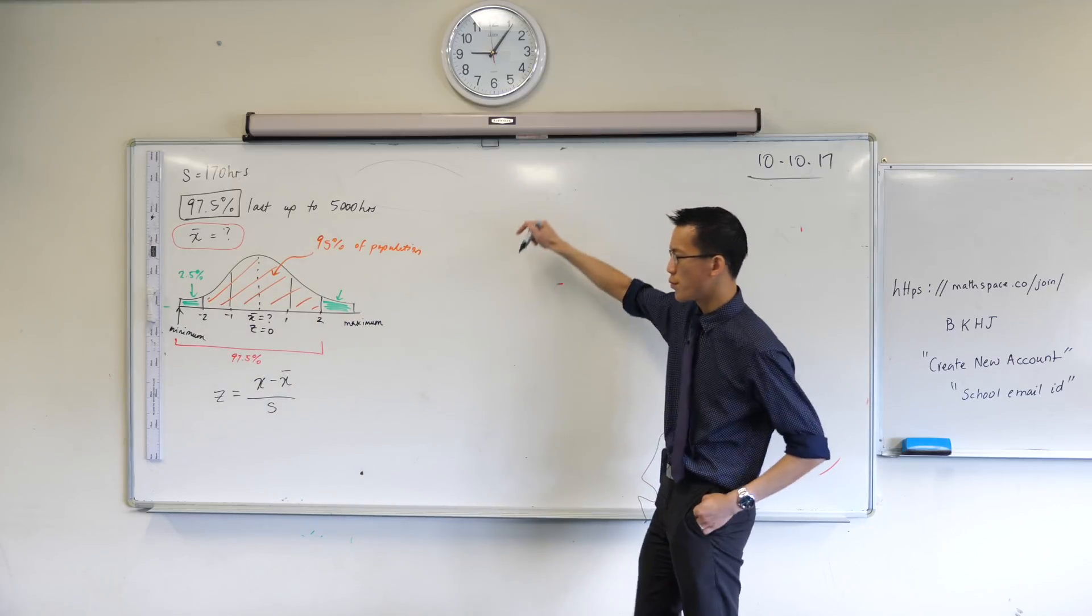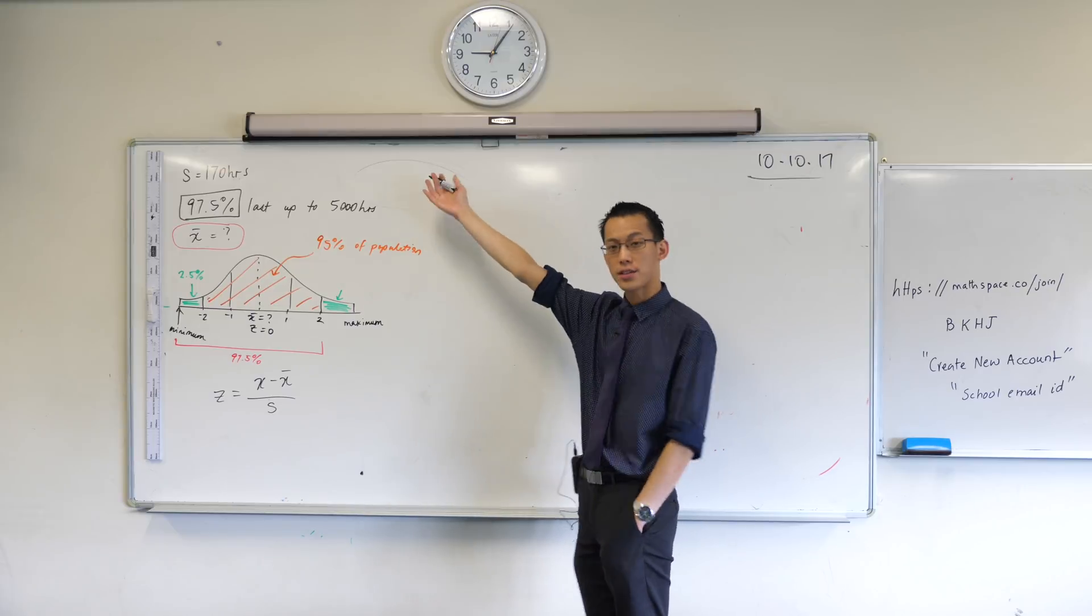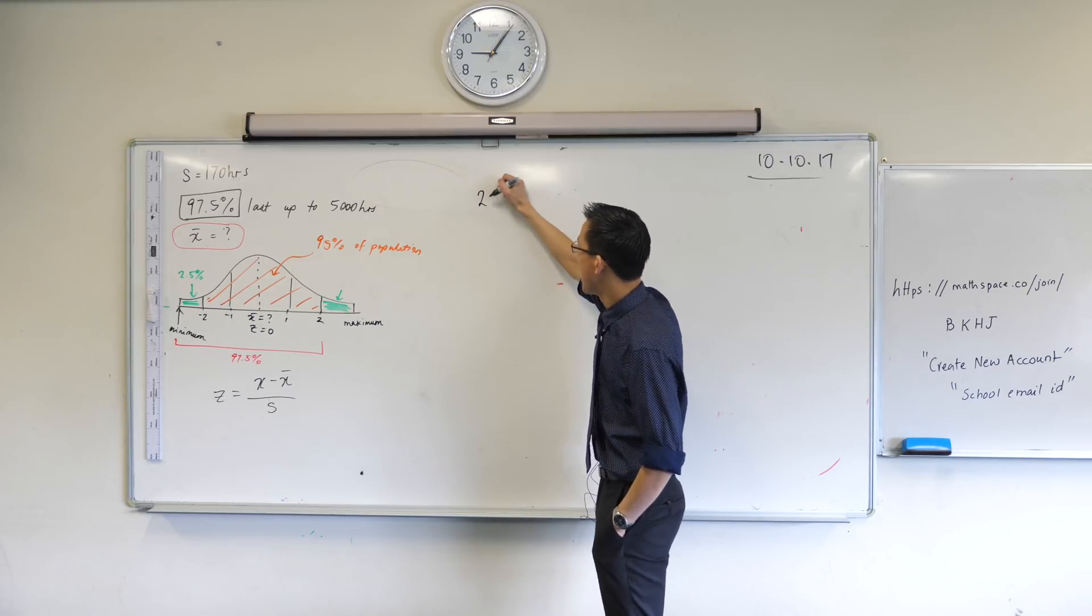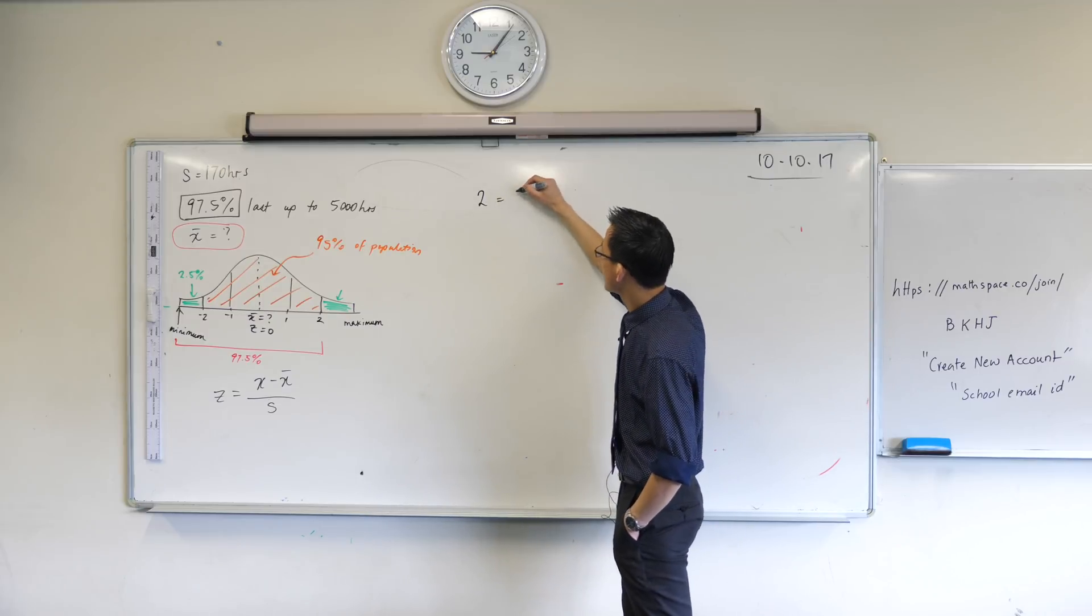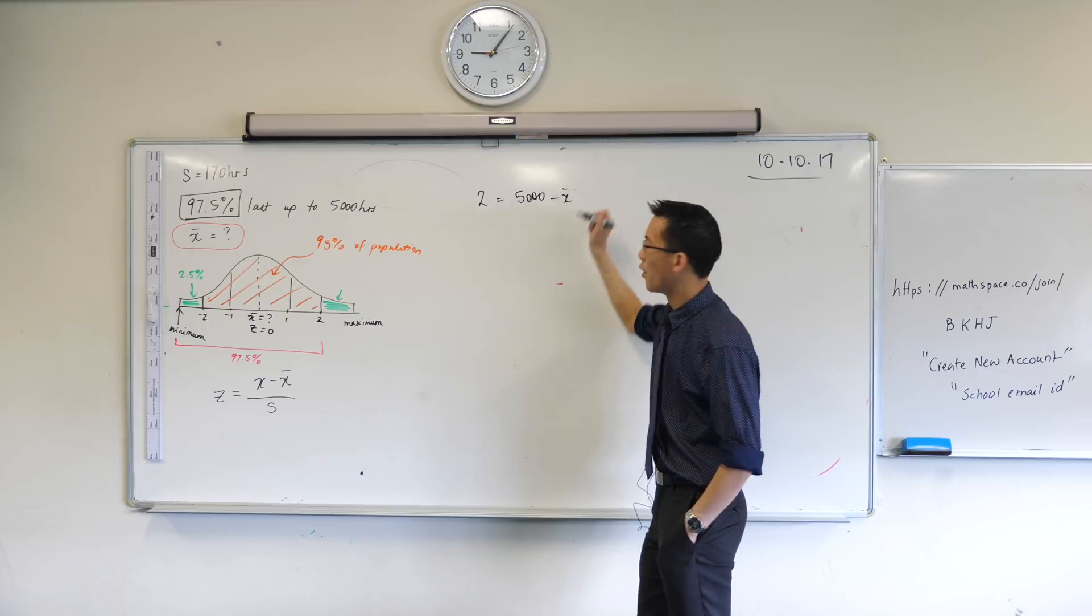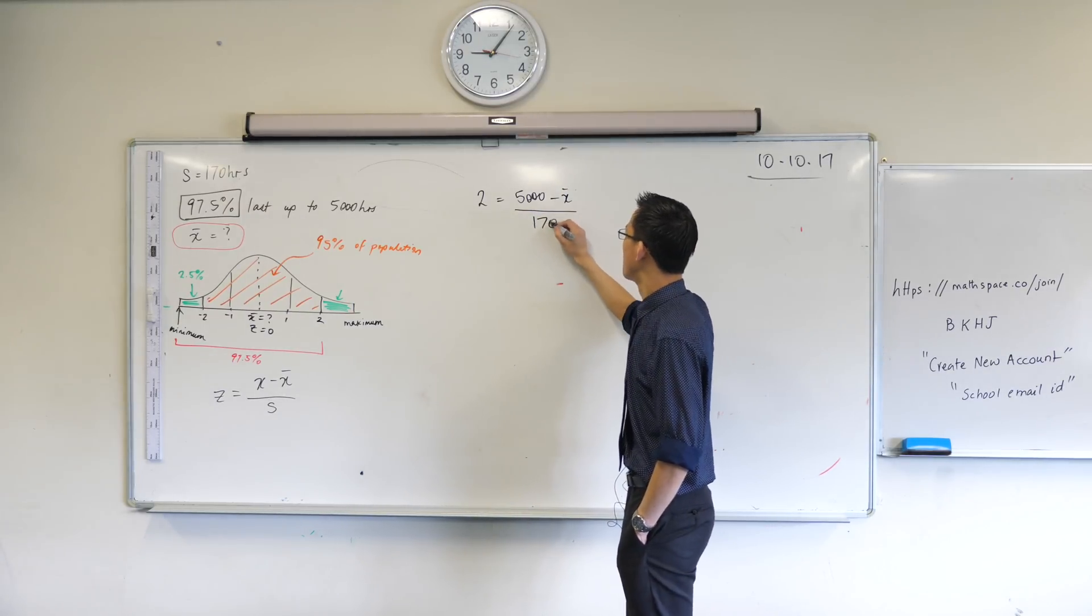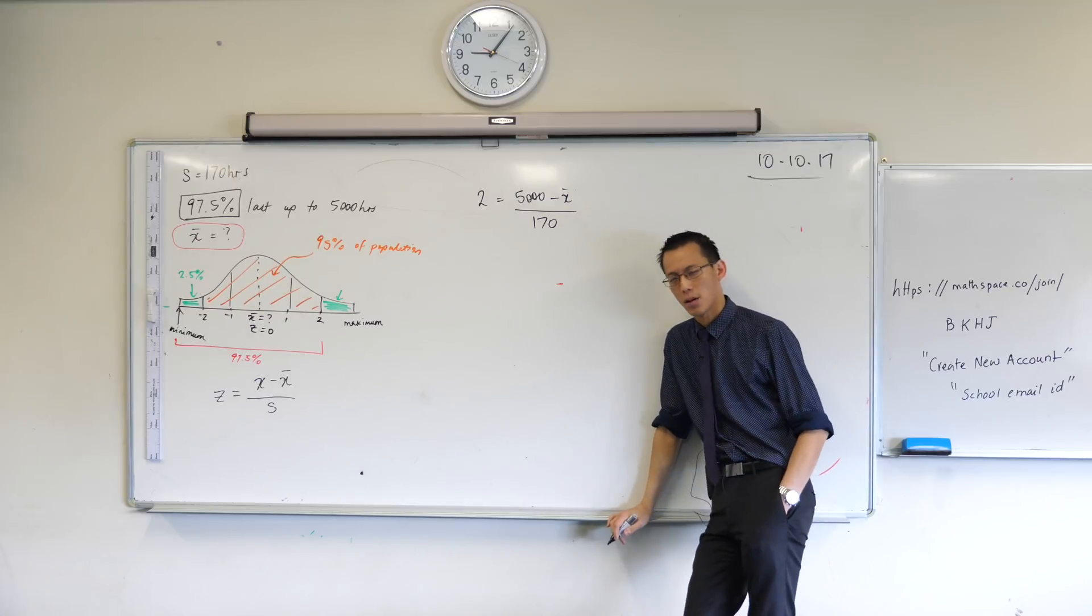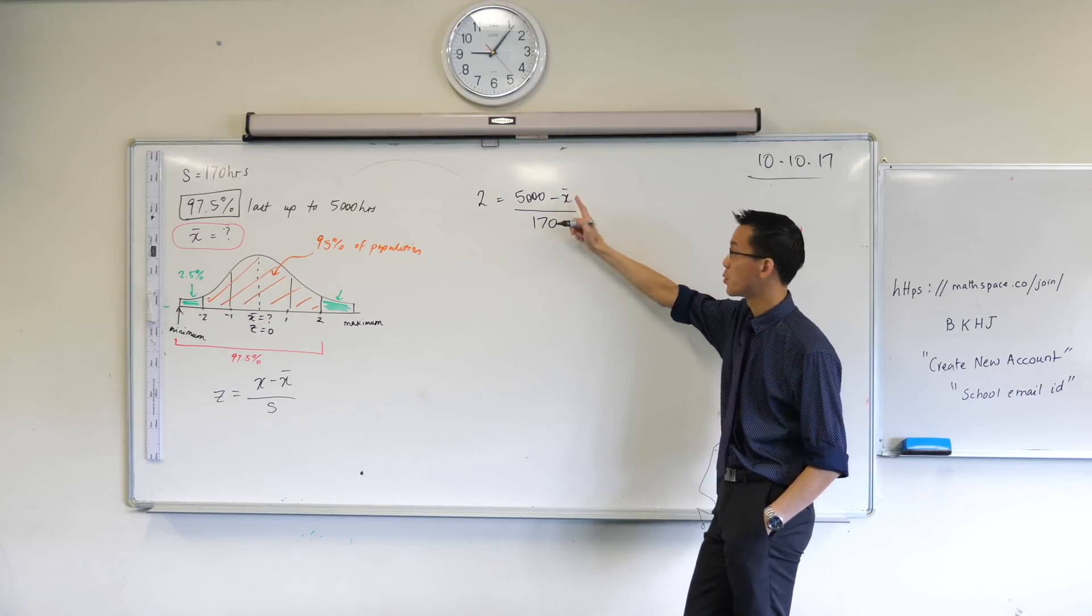Just carrying on over here because I have more room. This light globe which lasts for 5,000 hours has a z-score of 2. So that's what I'm going to write instead of z. Its lifespan is 5,000. I don't know what the mean is; I'm going to find that out in a second. The standard deviation has been provided in the question. This is the equation which will tell me the mean.